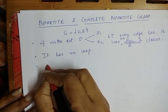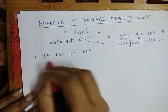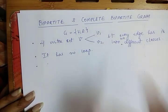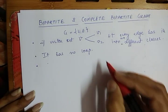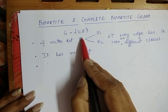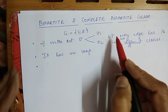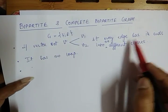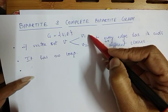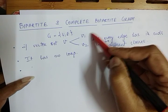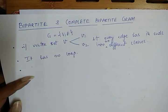The third point is that it is denoted as a Bipartite graph. So first of all, let's look at an example. The first condition is that our vertex set is partitioned into V1 and V2 — two different classes — meaning the vertices of V1 should not be joined among themselves, and there is no self-loop.